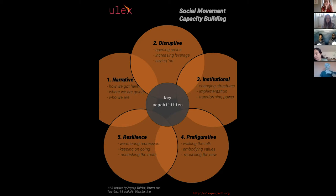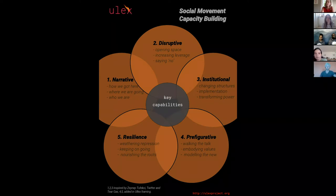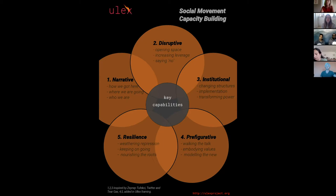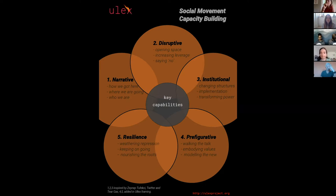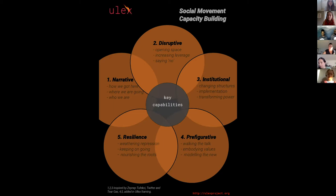The second capability is disruptive capacity — you could think of this as the different kinds of civil disobedience that movements might be involved in, but also the ways our movements help open up space for change, increase leverage, and say no to the day-to-day functioning of the status quo. The third is institutional capability, so important as a way of translating stories and leveraging disruption to make real structural change.